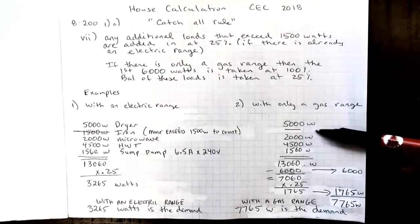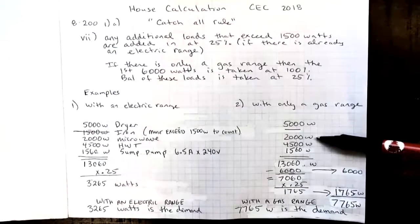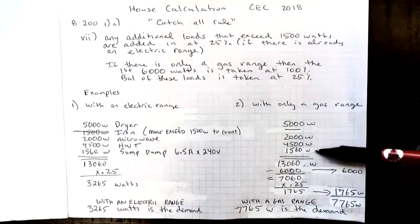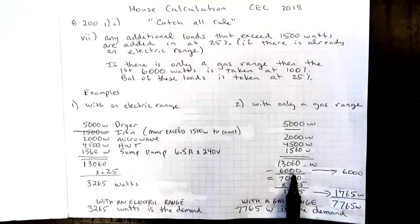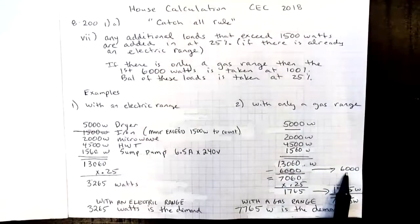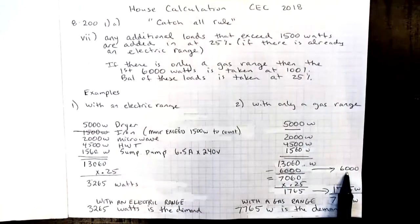I am going to include the same items. The dryer, we won't include the iron because it does not exceed 1500 watts. We will include the microwave, the hot water tank, and the sump pump. Those items add up to 13,060 watts. Take that first 6,000 watts and we're going to include all of the 6,000 watts.